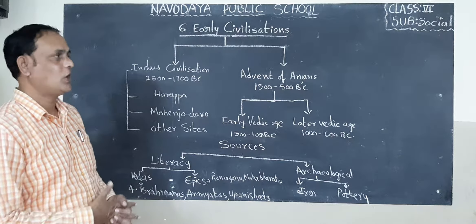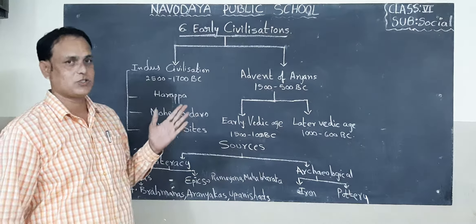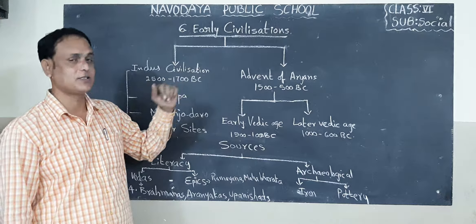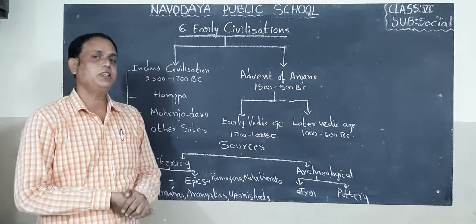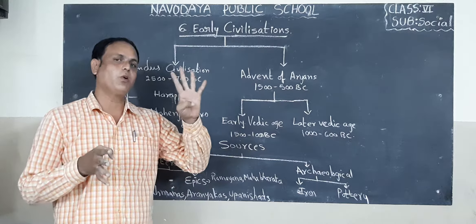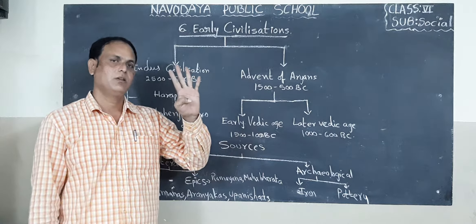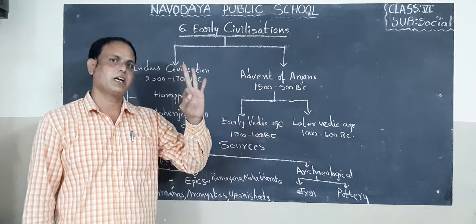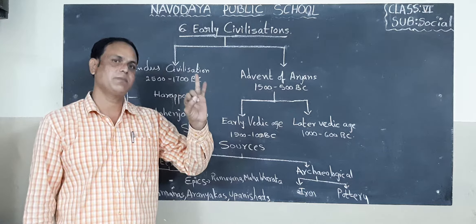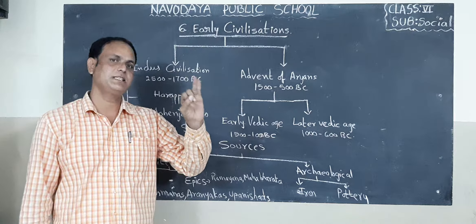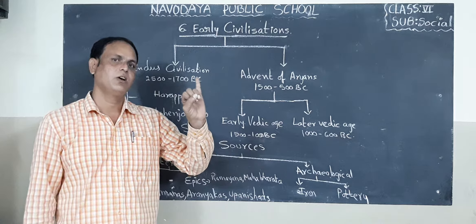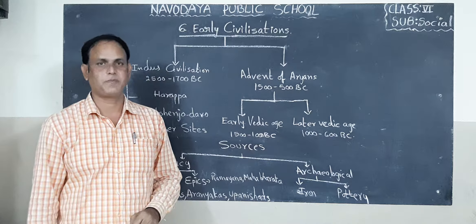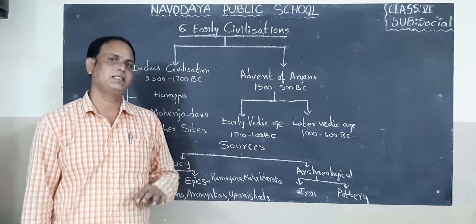Good morning children. This is 6th class social studies, 6th lesson: Early Civilizations. Actually in the world we can find 4 early civilizations. The first one is Indus Valley civilization. Second one is Egypt civilization. Third one is Mesopotamian civilization. Fourth one is China civilization.